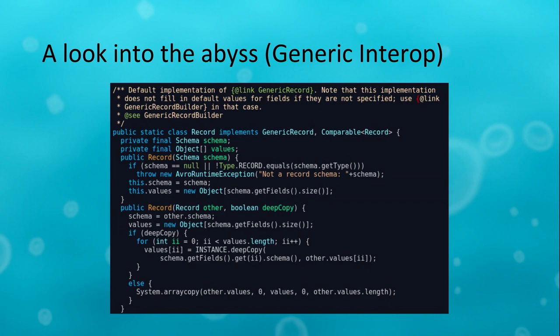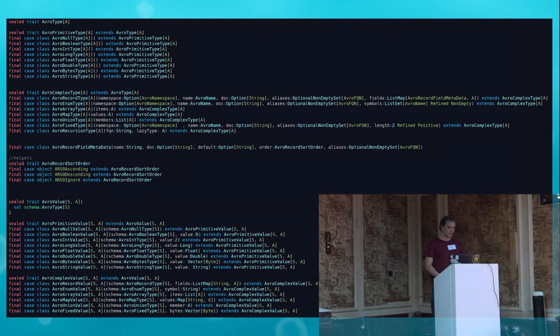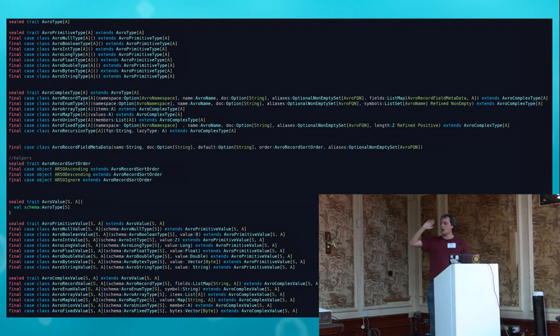This is the GenericRecord representation that Java uses for any generic record in Avro. You might spot the issue: your values are just an array of Objects. What you're forced to do is take the schema, look up the field position of the field you want, look up its type, figure out what you have to typecast the array value as, and then hope nothing explodes. In contrast, this is the complete ADT I wrote for any schema representation as well as any generic value representation — and it barely fits on one slide.